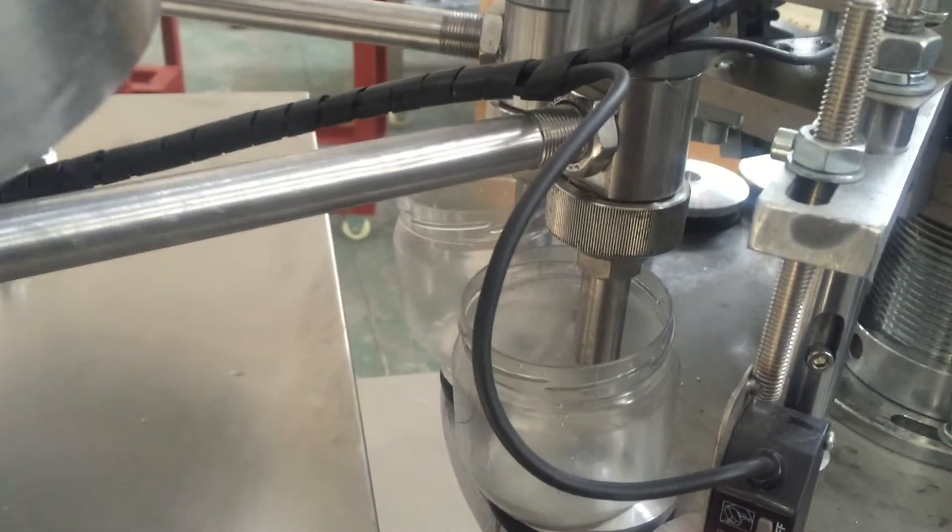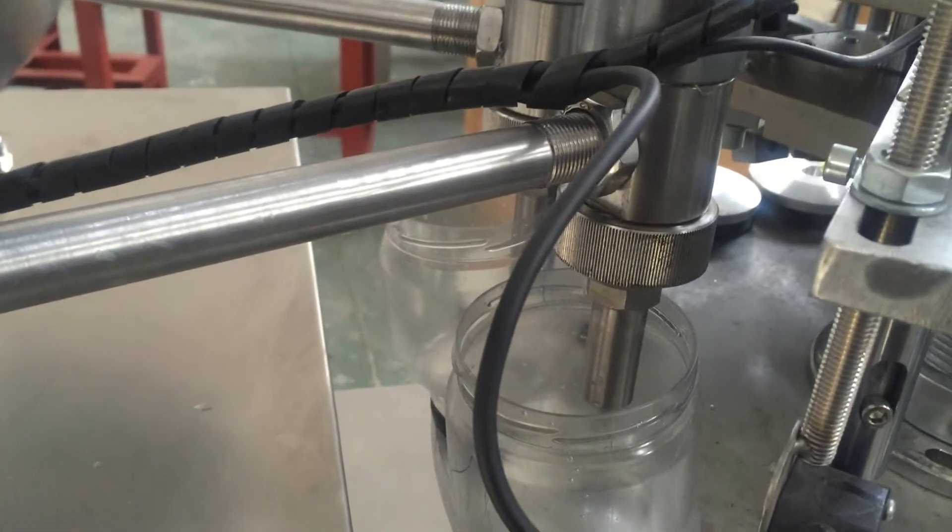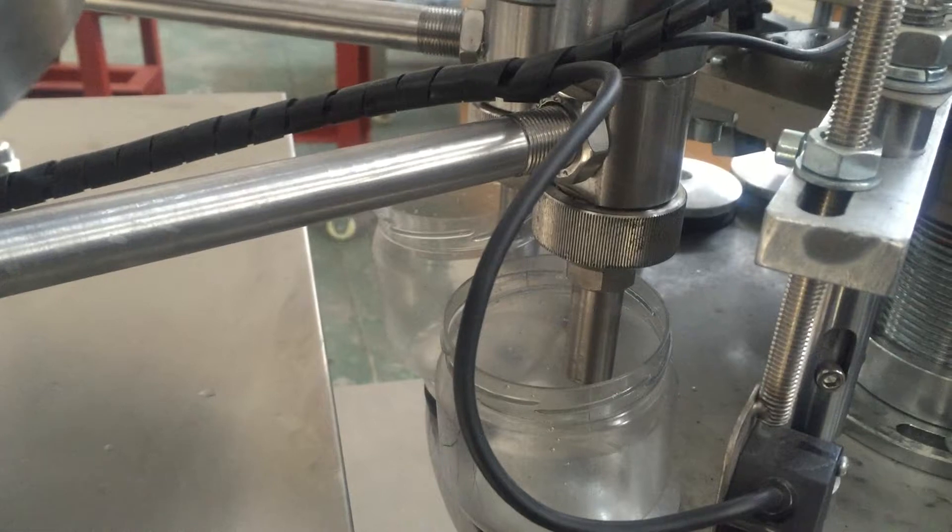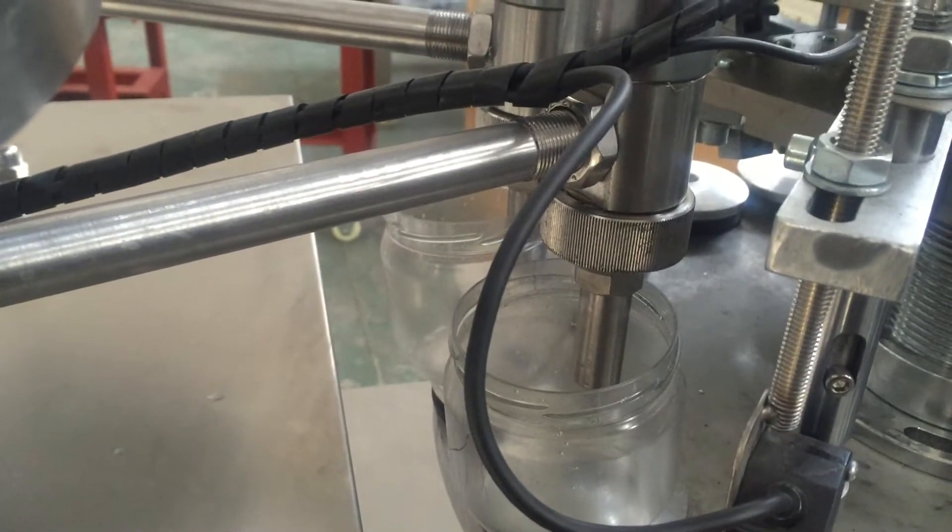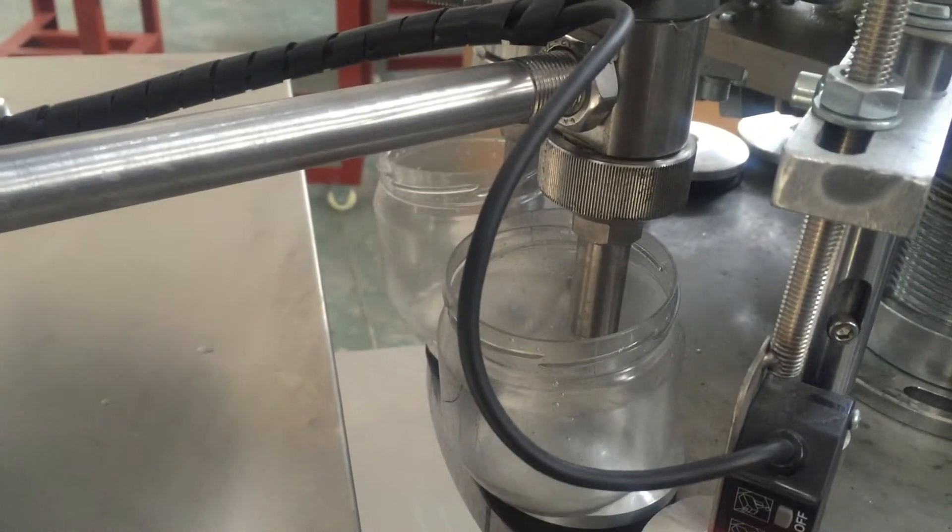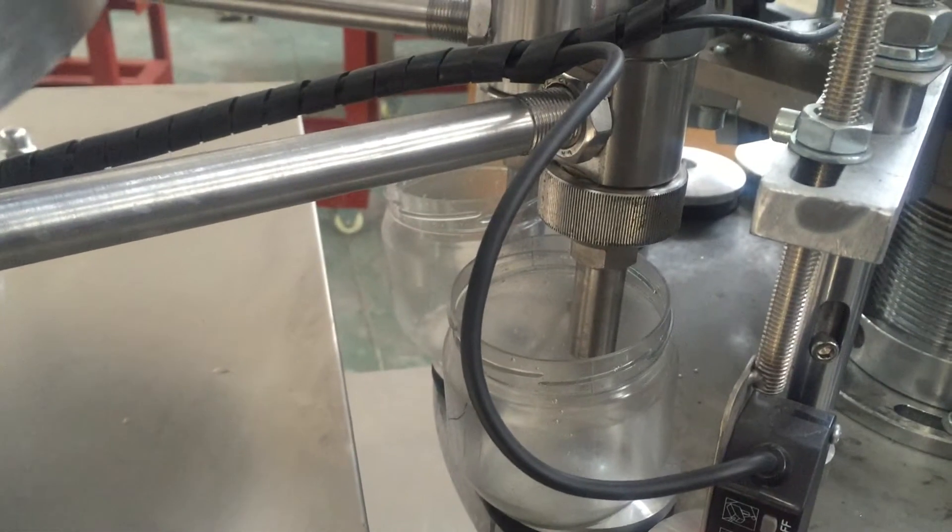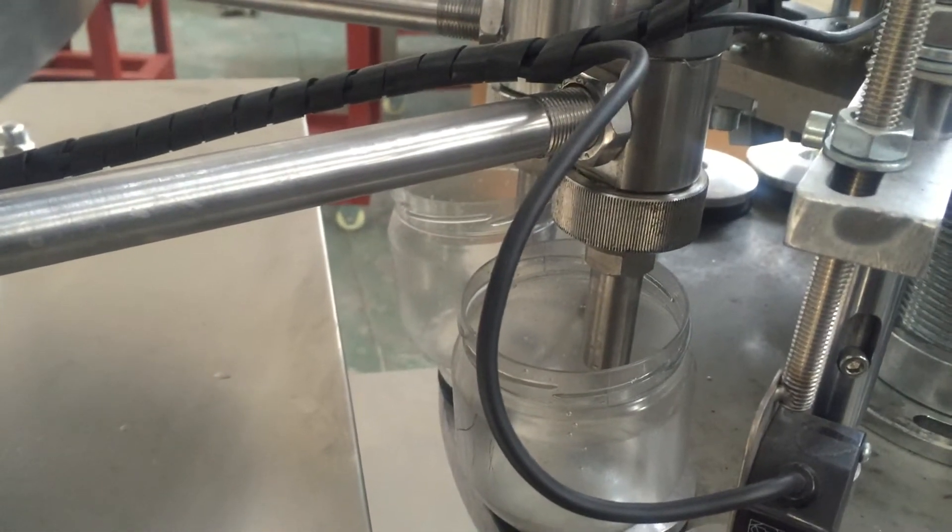So the hole of the filling nozzle will be small, so this way you have enough power, enough strength to push the glue into the tube, into the bottom of the tube.